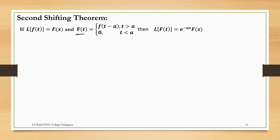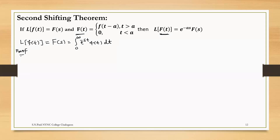First of all, we write the definition of the Laplace transform. We know the definition: the Laplace transform of f(t) is equal to capital F(s), equal to the integral from 0 to infinity of e raised to minus s·t into f(t) with respect to t. Now here we find the Laplace of capital F(t), so instead of small f we write capital F.